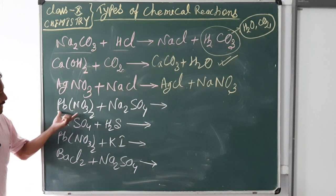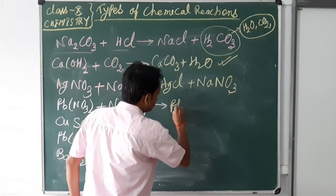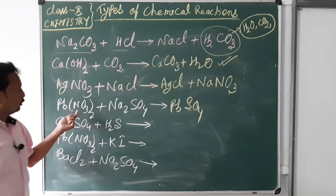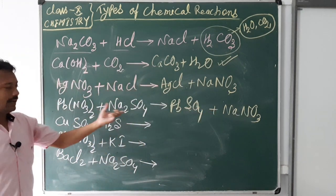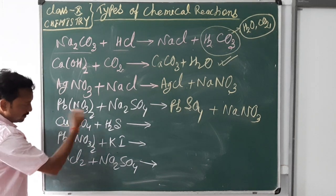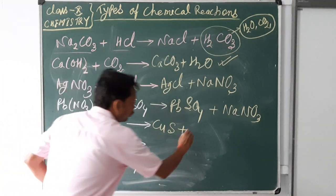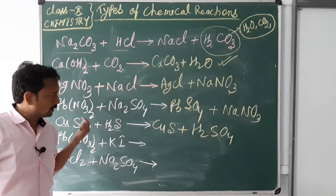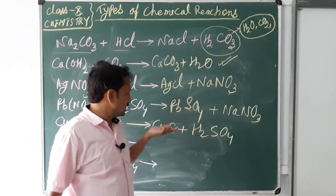When lead nitrate dissolves in sodium sulphate solution, it forms lead sulphate PbSO₄ and sodium nitrate NaNO₃ — these two reactants interchange their partners and form new products. Similarly, copper changes partners with sulphur, forming copper sulphide and H₂SO₄. In another example, lead iodide PbI₂ and KNO₃ are formed, and in another, NaCl and BaSO₄ white precipitate are formed. All of these are examples of double displacement reactions because the reactants interchange their partners to form stable products.